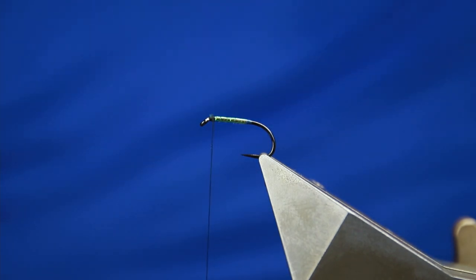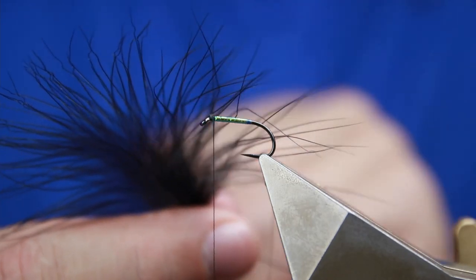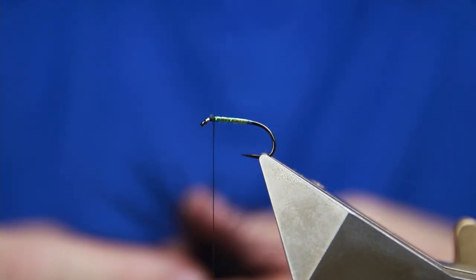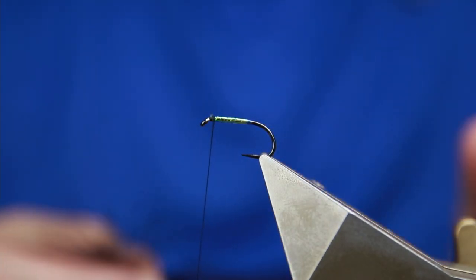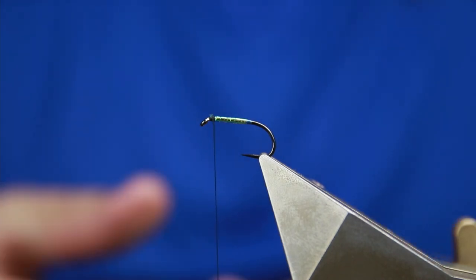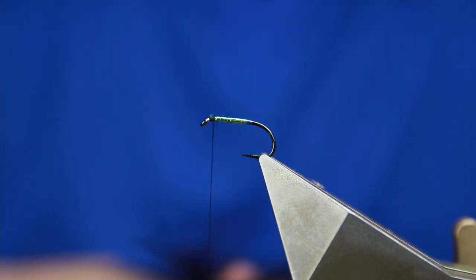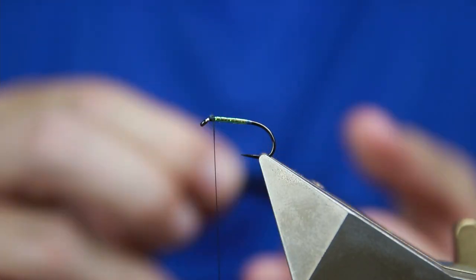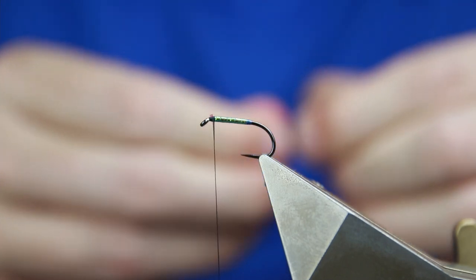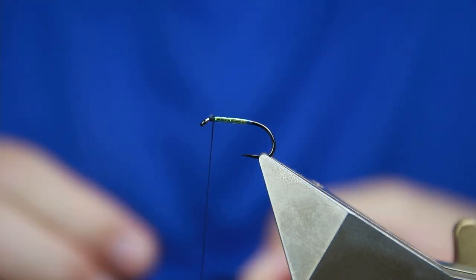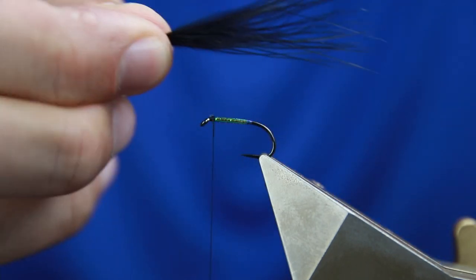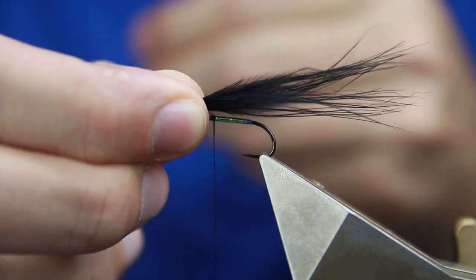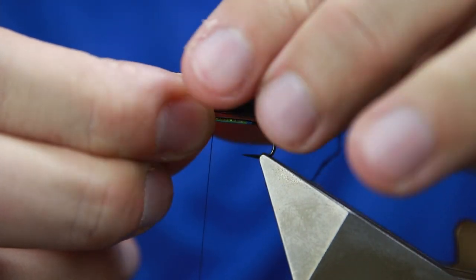So next up is some black marabou. Some people on a cormorant prefer the plumes to be the sharper end, and some people prefer thicker. I don't really mind either to be honest—I don't think it makes that much of a difference. I've tried both and had equal success. So take about an inch and a half worth of plumes, wet the end, and then catch those in.